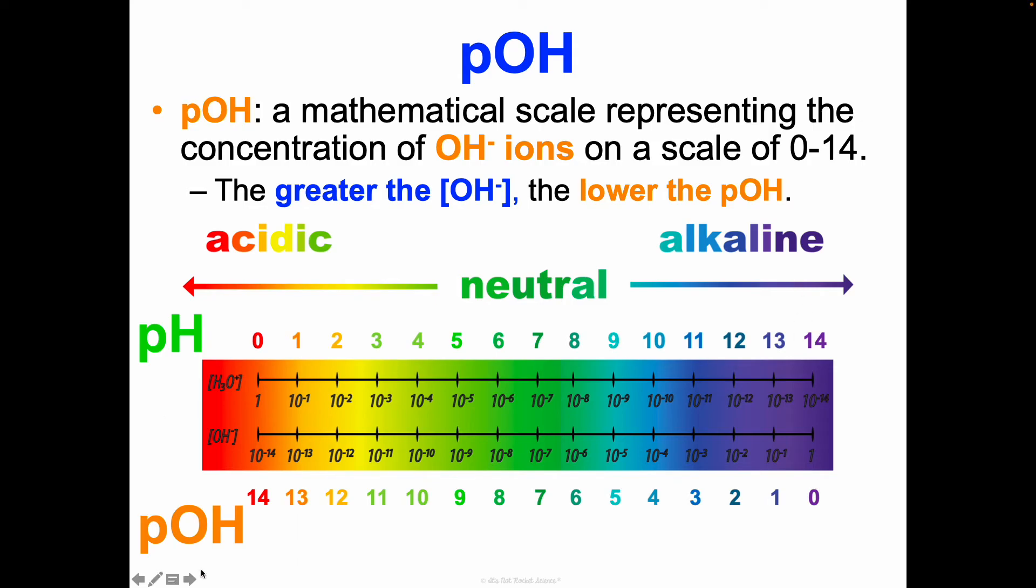If you have very small hydroxide ions, like 10 to the negative 13, then you have a very low pOH, but you have a very high pH. Hopefully you'll see here a little pattern.